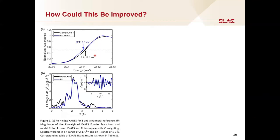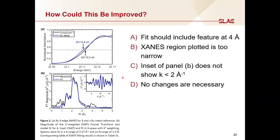Next, we're looking at the ruthenium k-edge XANES in the top panel and EXAFS in the bottom panel. The answer is D — this is fine and no changes are necessary. The XANES spectra have been plotted clearly, with arrows highlighting an important difference between the spectra. The measured and fit EXAFS are labeled well and fit appropriately.